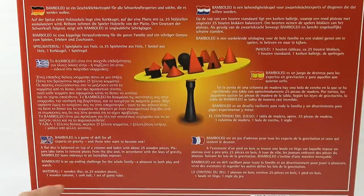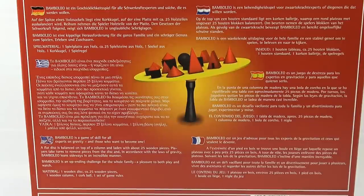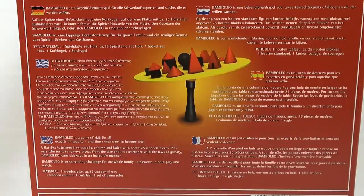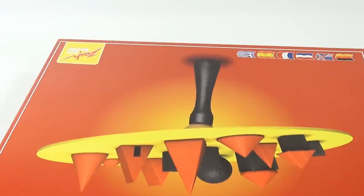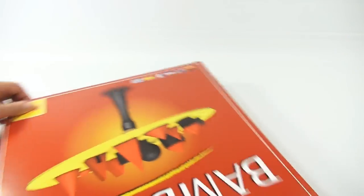So you're getting one wooden disc, 25 wooden pieces, one wooden column, one cork ball, one set of game rules. Not much more I can figure out there. Let me get inside the box so we can see it all together here.